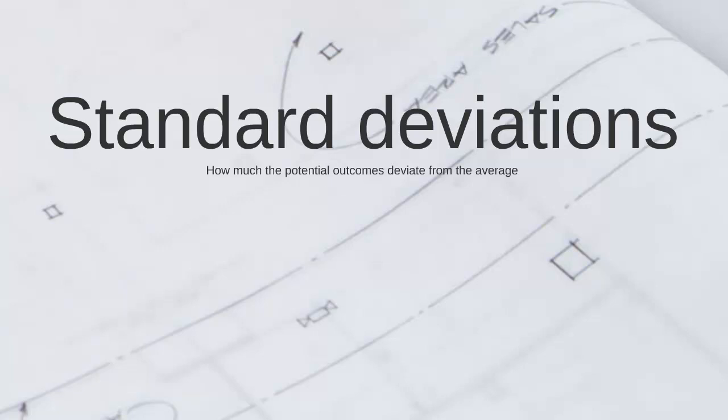The wider the range of potential outcomes, the riskier the project becomes — the riskier the project is for us to implement. I'm going to use a very simple example to explain what this means, so let's consider the following figures.